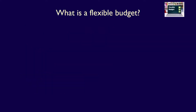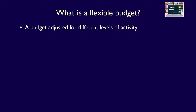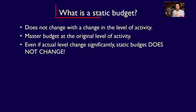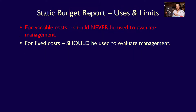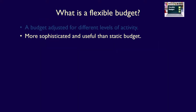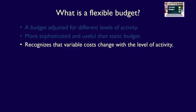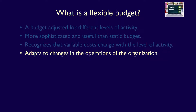What is a flexible budget? It's a budget which adjusts for changes in the level of activity. This is very different from a static budget, which is unchanged from the level of activity at the time the master budget was created. A static budget cannot be used to evaluate management's performance with regards to variable costs, which is a significant drawback. Flexible budgets are more sophisticated and useful because they recognize that variable costs change with the level of activity, and therefore adapt to changes in the operations of the business.